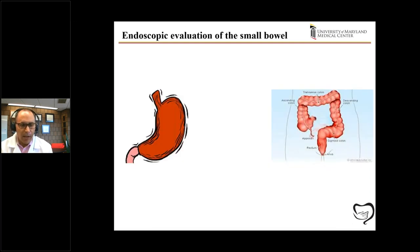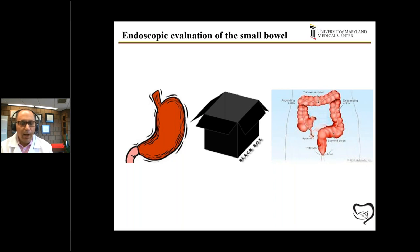An upper endoscopy uses the same concept, but the scope goes into your mouth rather than your bottom, evaluating the esophagus, stomach, and the beginning of the small bowel. The colonoscopy evaluates the whole colon and the end of the small bowel — but there is a 14 to 16 foot section of small bowel in between that these scopes cannot reach. Imaging like CT and MRI can provide pictures, but visually seeing the small bowel directly can be a challenge.